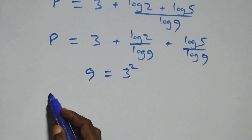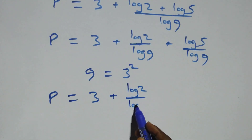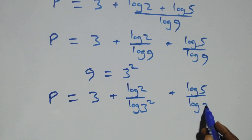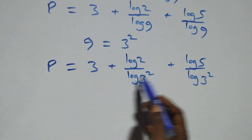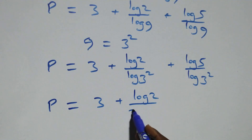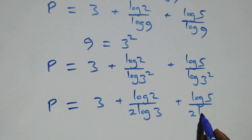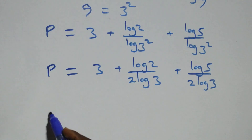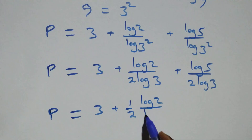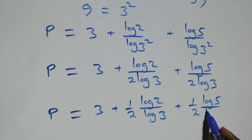Then we separate this into two fractions: p equals to 3 plus log 2 over log 9 plus log 5 over log 9. Also here 9 can be expressed as 3 times 3, that's 3 squared. So this becomes p equals to 3 plus log 2 over log 3 squared plus log 5 over log 3 squared. Applying the power rule, this gives p equals to 3 plus log 2 over 2 log 3 plus log 5 over 2 log 3, which is the same as p equals to 3 plus one half times log 2 over log 3 plus one half times log 5 over log 3.